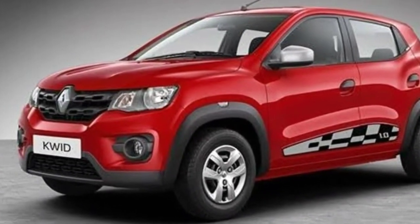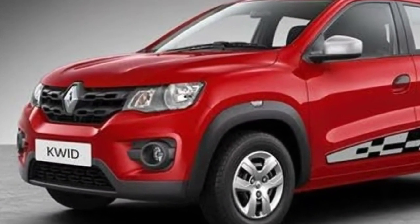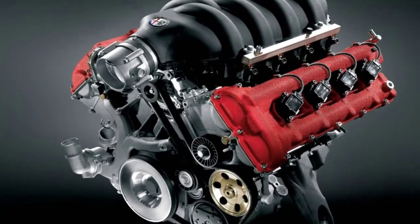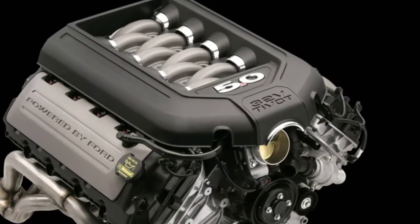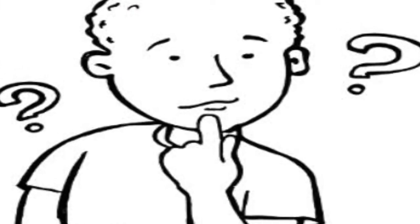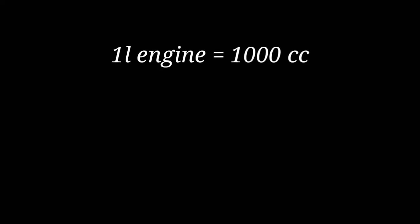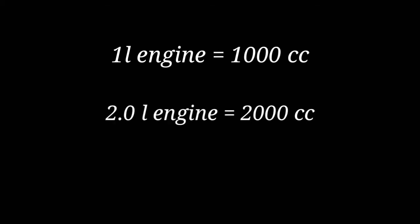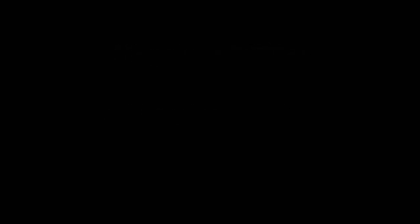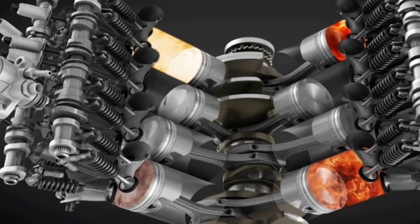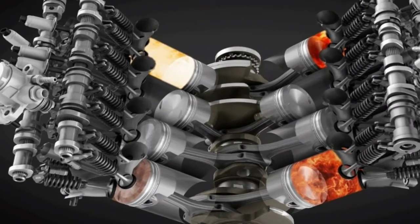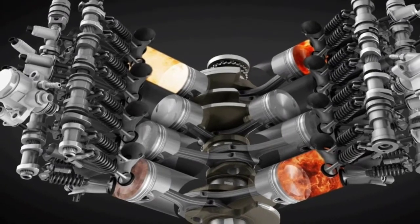If you look at the car, this is a 1.2L diesel engine, 2L petrol engine, 2L diesel engine. If you look at the terms, 1L diesel engine is equal to 1000cc. So a 2.2L diesel engine is equal to 2200cc. This is the entire CC. This is the cylinder engine. This is the efficiency engine.